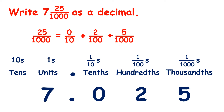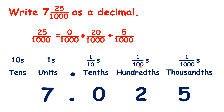That's because 0 tenths is equivalent to 0 thousandths, and 2 hundredths — if we multiply both the numerator and denominator by 10 — is equivalent to 20 thousandths. So 25 thousandths is the same as 0 thousandths plus 20 thousandths plus 5 thousandths. But because we can only have one digit in each place value column, and because for decimal place values we always have tenths, then hundredths, then thousandths, we need to think 0 tenths plus 2 hundredths plus 5 thousandths.